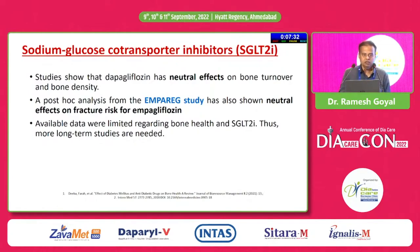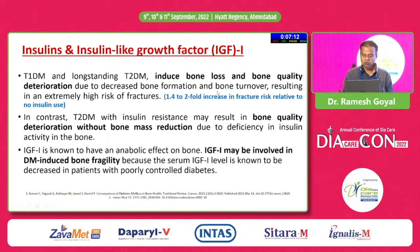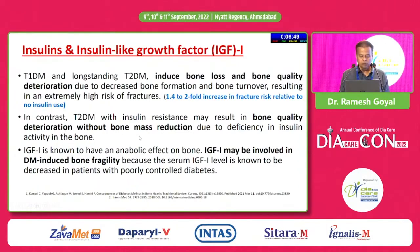Regarding insulins and insulin-like growth factors — increased risk of fractures is noted in post-menopausal type 1 diabetic females and long-standing type 2 diabetics. Insulin-induced bone loss and quality deterioration stem from decreased bone formation and bone turnover, resulting in a 1.42 to 2-fold increase in fracture risk relative to no insulin use. In type 2 diabetics, insulin resistance may cause bone quality deterioration without bone mass reduction. IGF-1, which has anabolic effects on bone, is decreased in uncontrolled diabetes, contributing to bone fragility.